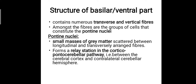The basilar part or the ventral part contains numerous transverse and vertical fibers. Amongst the fibers are groups of cells that constitute the pontine nuclei, which are small masses of grey matter scattered between the longitudinal and transversely arranged fibers. It forms a relay station in the cortico-ponto-cerebellar pathway, which exists between the cerebral cortex and the contralateral cerebellar hemisphere.